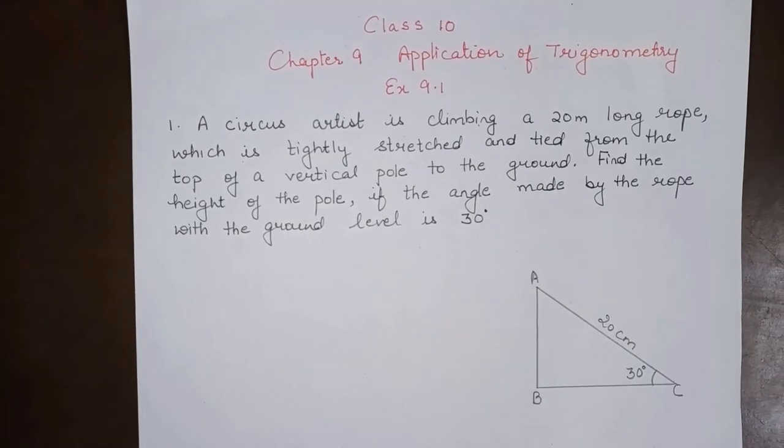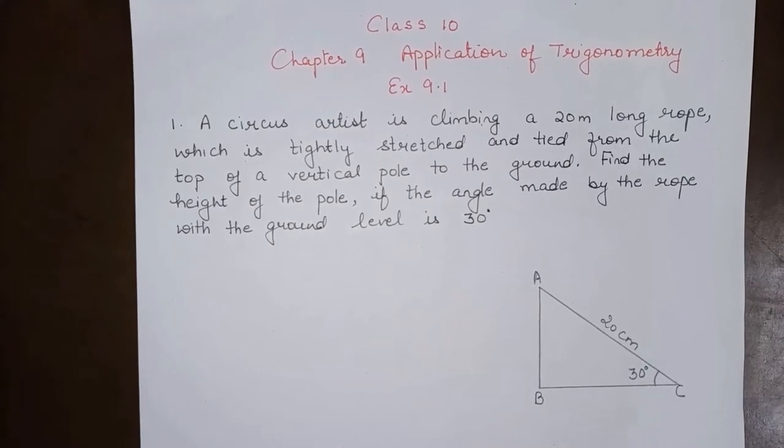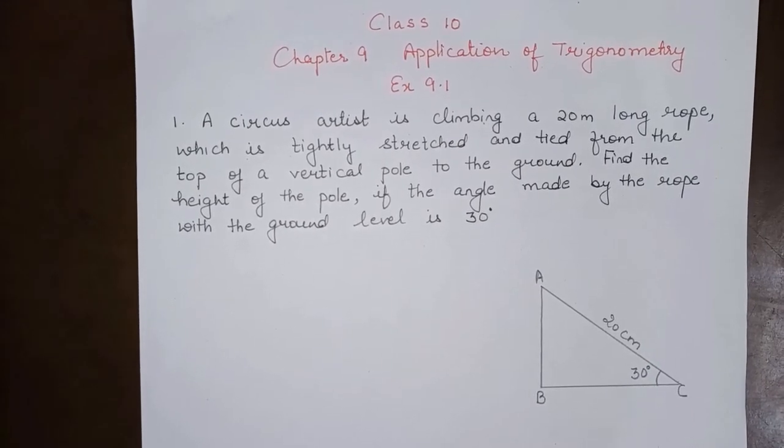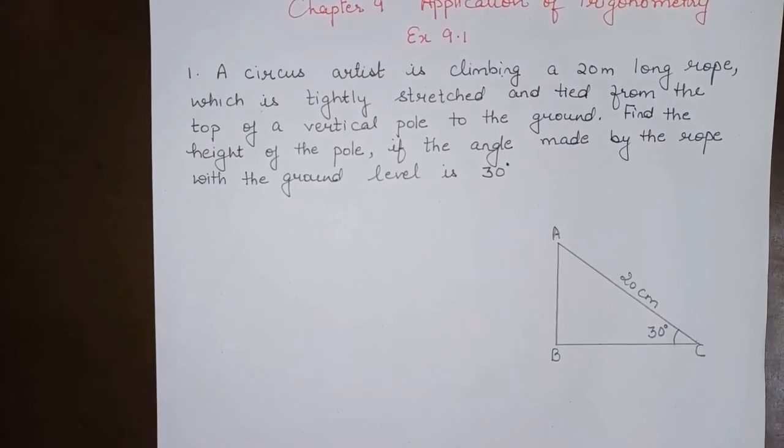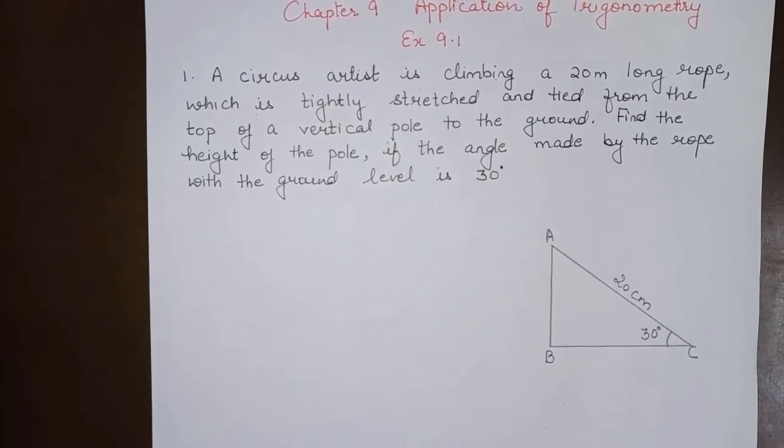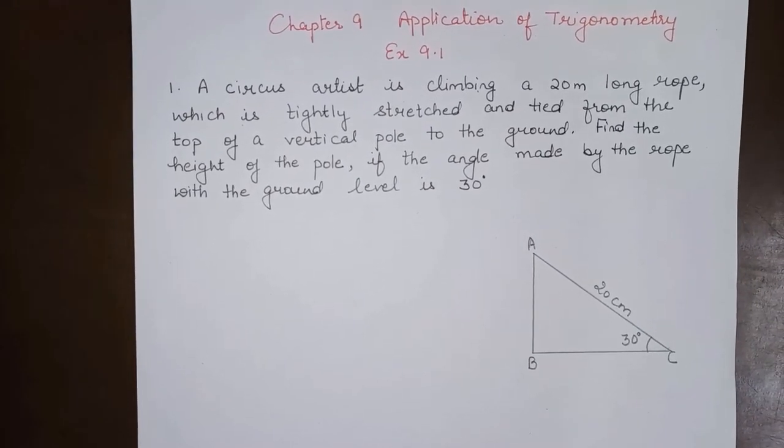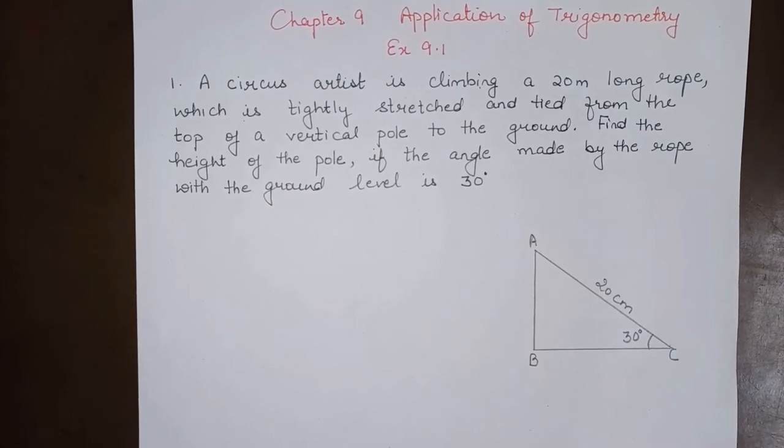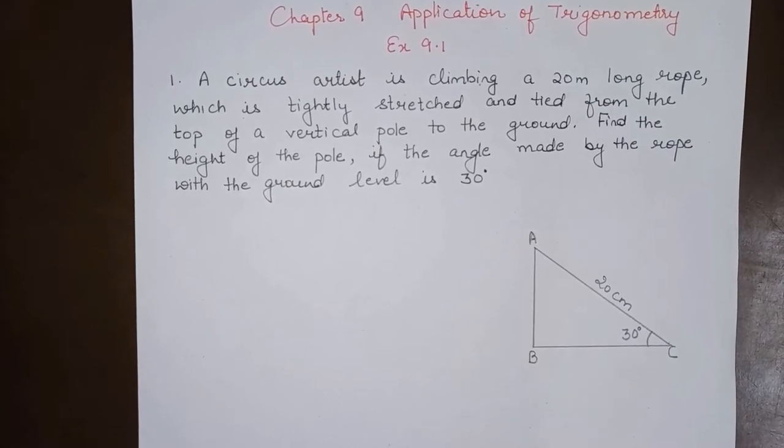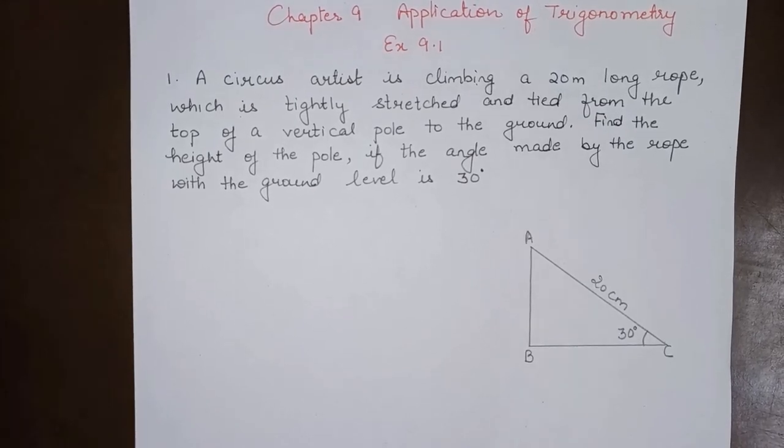Hello everyone, today we will do Class 10th, Chapter 9, Application of Trigonometry, Exercise 9.1, first question. A circus artist is climbing a 20 meter long rope which is tightly stretched and tied from the top of a vertical pole to the ground. Find the height of the pole if the angle made by the rope with the ground level...